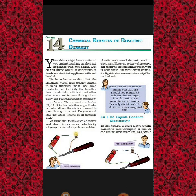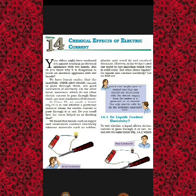You have learned earlier that some substances allow electric current to pass through them, while others do not. Those which allow electric current to pass through are called conductors, and those which do not are called insulators or poor conductors of electricity. Here, there is a picture of a tester where a battery is connected to a bulb, and the wires are touching a screwdriver. When you touch the screwdriver, the current passes and the bulb lights up, showing that electricity is passing through the tester.